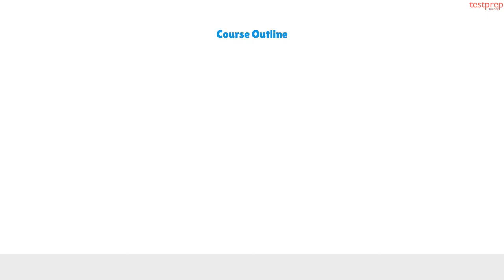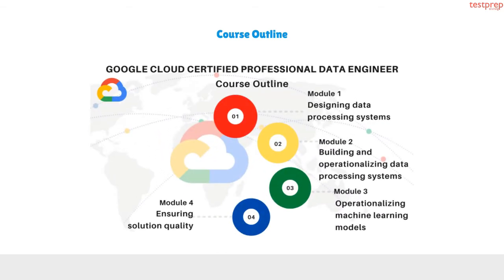Course outline for Google Cloud Professional Data Engineer. Take a glance at the topics that need to be covered for the exam. First, designing data processing systems. Second, building and operationalizing data processing systems. Third, operationalizing machine learning models. Fourth, ensuring solution quality.